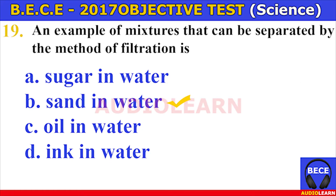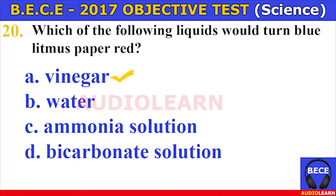Number nineteen. An example of mixtures that can be separated by the method of filtration is A. sugar in water, B. sand in water, C. oil in water, D. ink in water. The answer is B. sand in water. An example of mixtures that can be separated by filtration is sand in water.